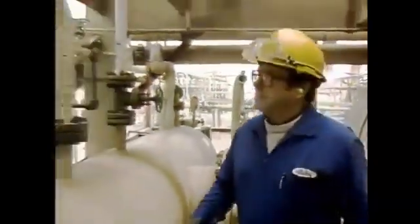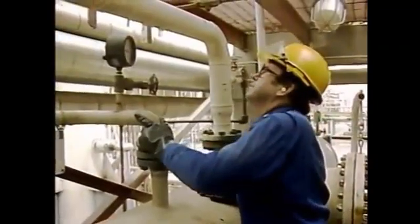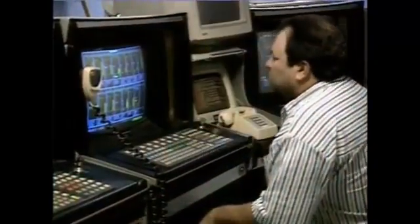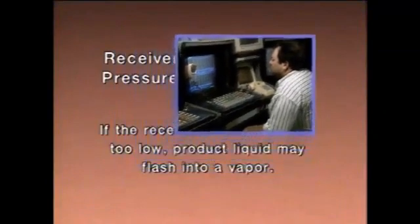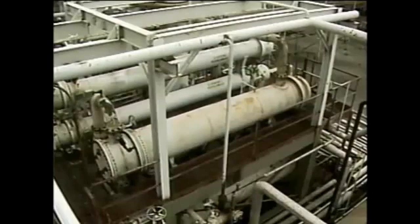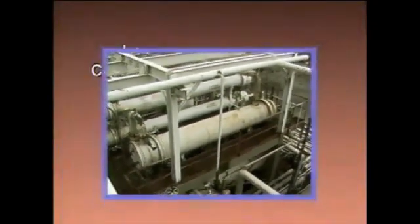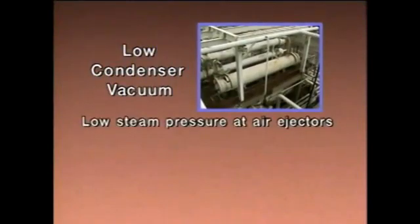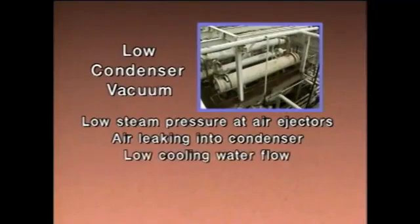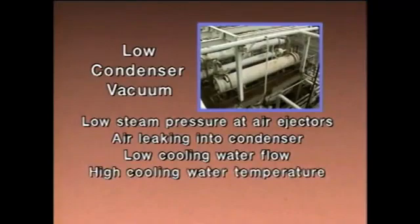Another important operator check is the unit's temperatures and pressure. These indications can be checked on instruments attached to the condenser or on displays in the control room. One pressure reading that is important to check is the receiver's pressure — if the pressure in the receiver drops too low, the product liquid may flash back into a vapor. On condensers that operate under a vacuum, insufficient vacuum may affect efficiency. Too little vacuum can result from steam pressure being too low at the air ejectors, from air leaking into the condenser, from too little cooling water flow, or from the cooling water temperature being too high.